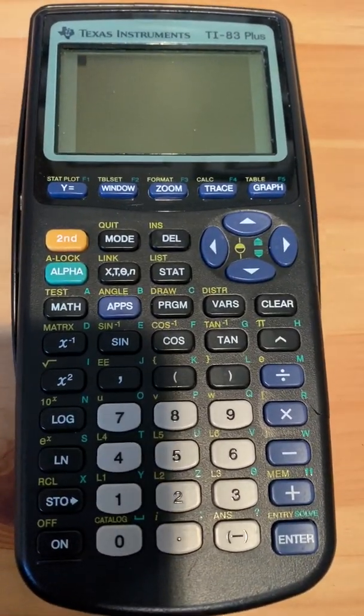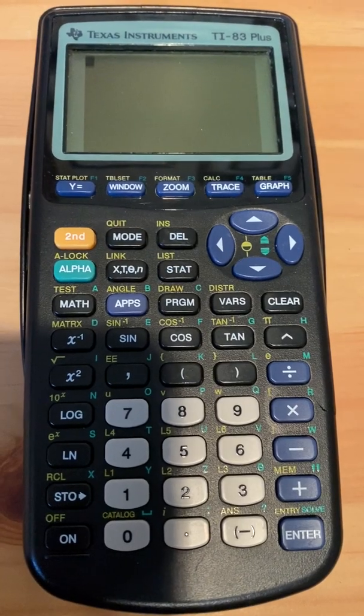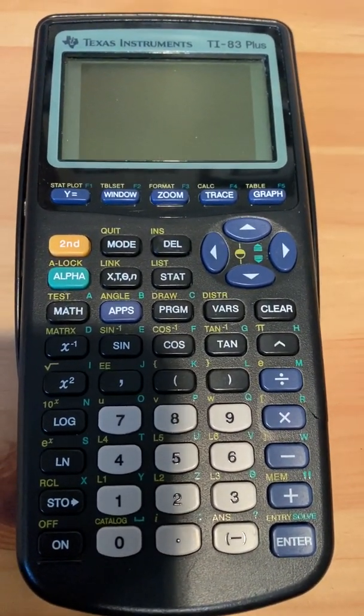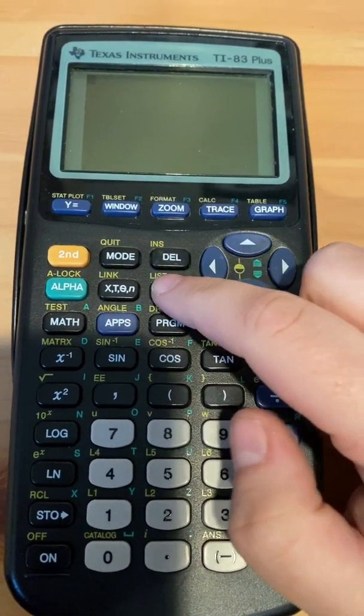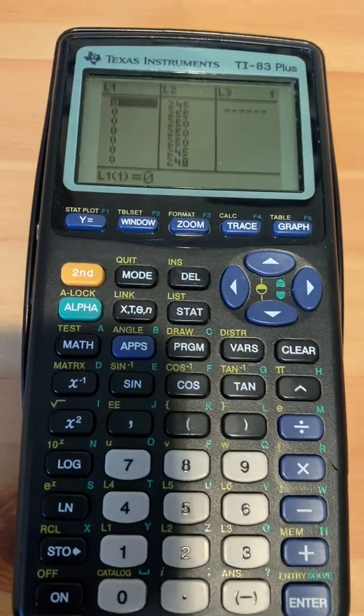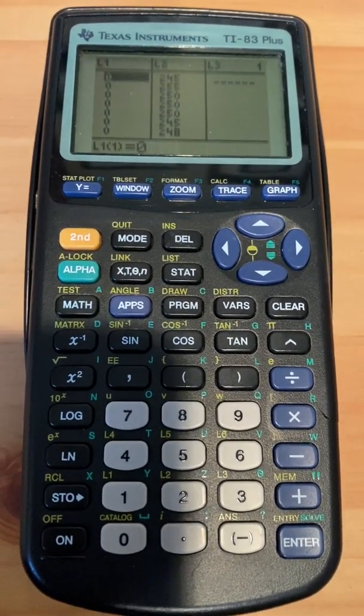All right you guys, so I'm going to show you how to find the residuals and find the predicted. First thing that you want to do on your calculator is make sure that you have your data put in list one and list two. If you have not done that, go ahead and do that now.